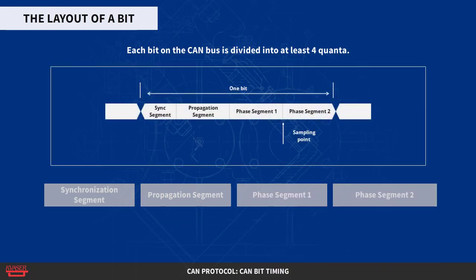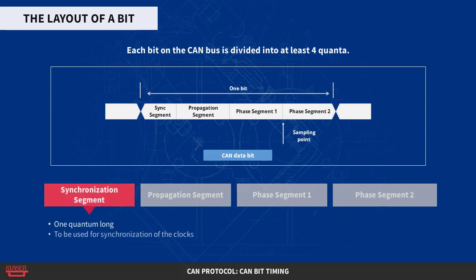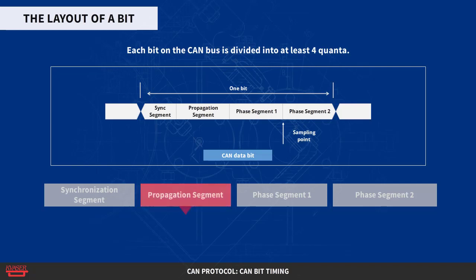Here is a picture of a CAN data bit. The synchronization segment, which always is one quantum long, is used for synchronization of the clocks. A bit edge is expected to take place here when the data changes on the bus. The propagation segment is needed to compensate for the delay in the bus lines.